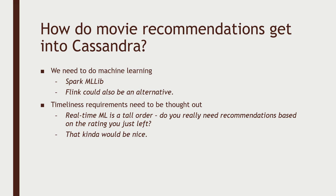Flink has a machine learning library as well. They can both do recommendations. In fact, Spark's MLlib has a thing called ALS that can actually generate individual movie recommendations for you — it's built in as a feature of that library. But let's think about the timeliness that the customer might expect. Doing machine learning on this kind of scale is going to take a lot of time and a lot of resources, even on a cluster.